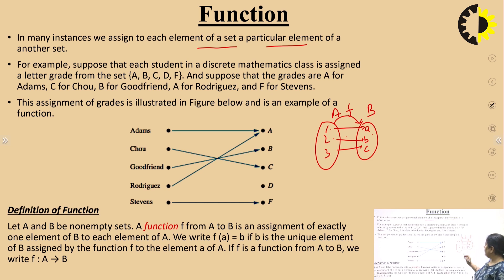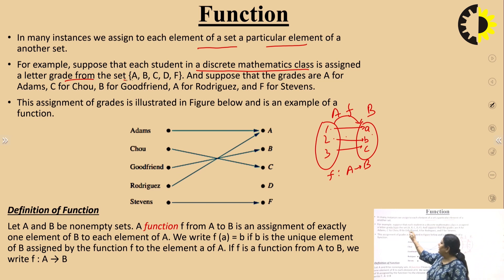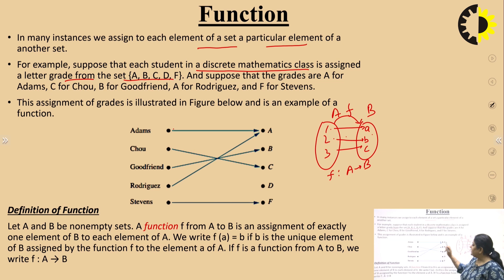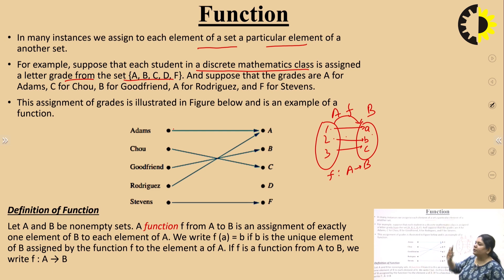We can show this as f from A to B. For example, suppose that each student in a discrete mathematics class is assigned a letter grade from the set A, B, C, D and F. Adams is assigned A, Chow is assigned C, Goodfriend is assigned B, Rodgreaves is assigned A, and Stevens is assigned F. So, on the basis of some functional criteria, these grades are assigned to these students. This is an example of a function.